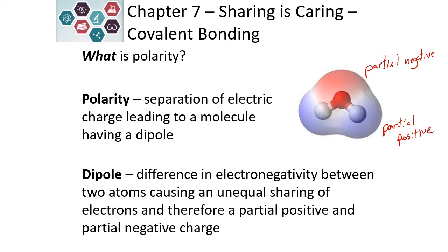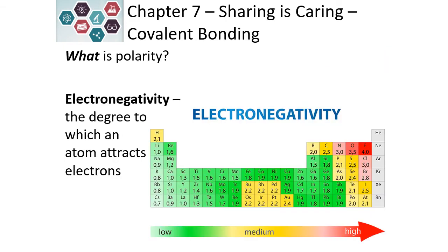And so our water molecules are polar. Electronegativity is a way that we measure how much an element wants to pull electrons towards itself. The general trend is that electronegativity increases as we go up the periodic table and as we go to the right. We're looking at the trend, not the individual numbers on the chart.